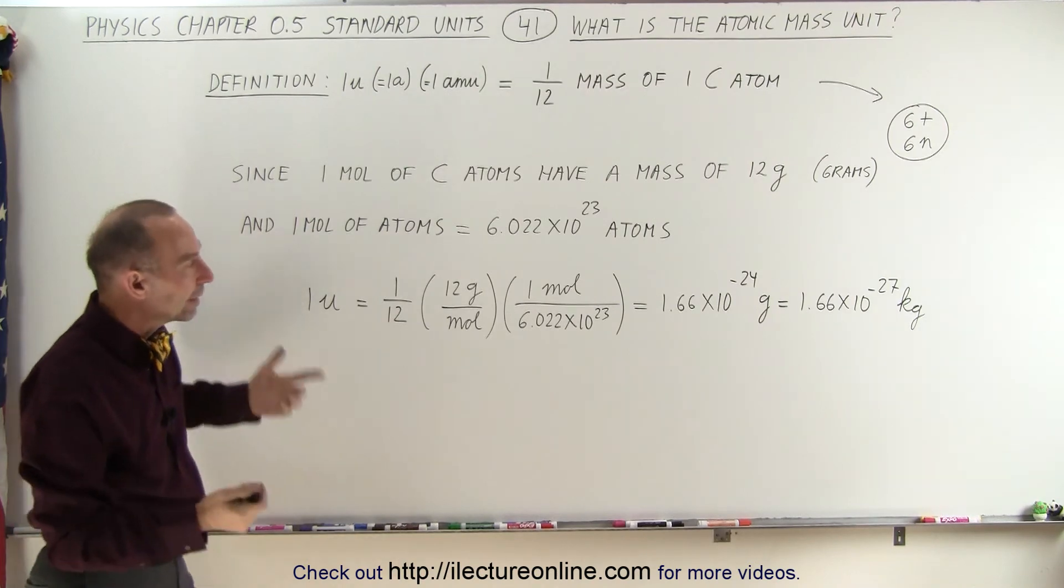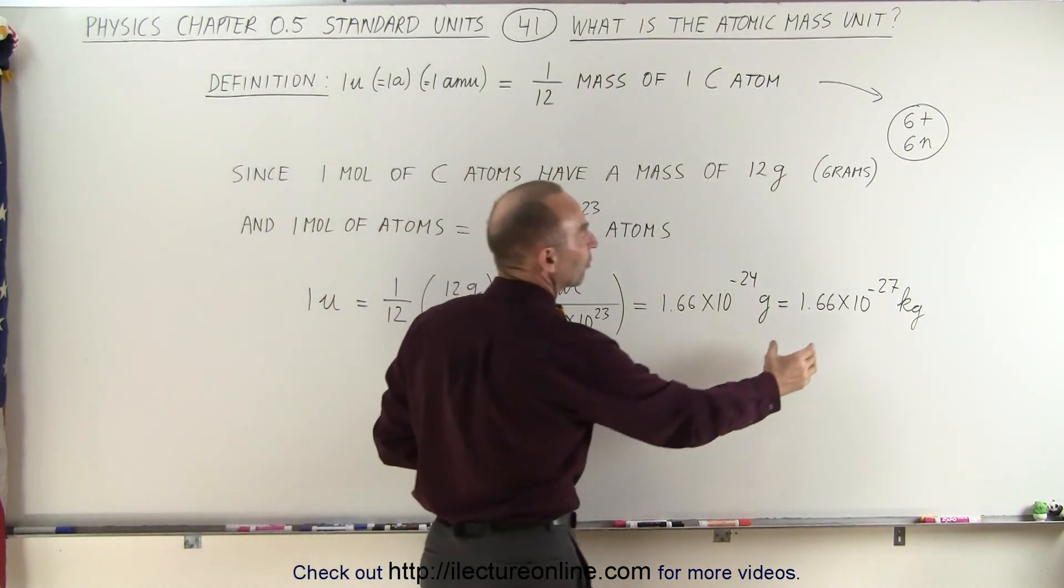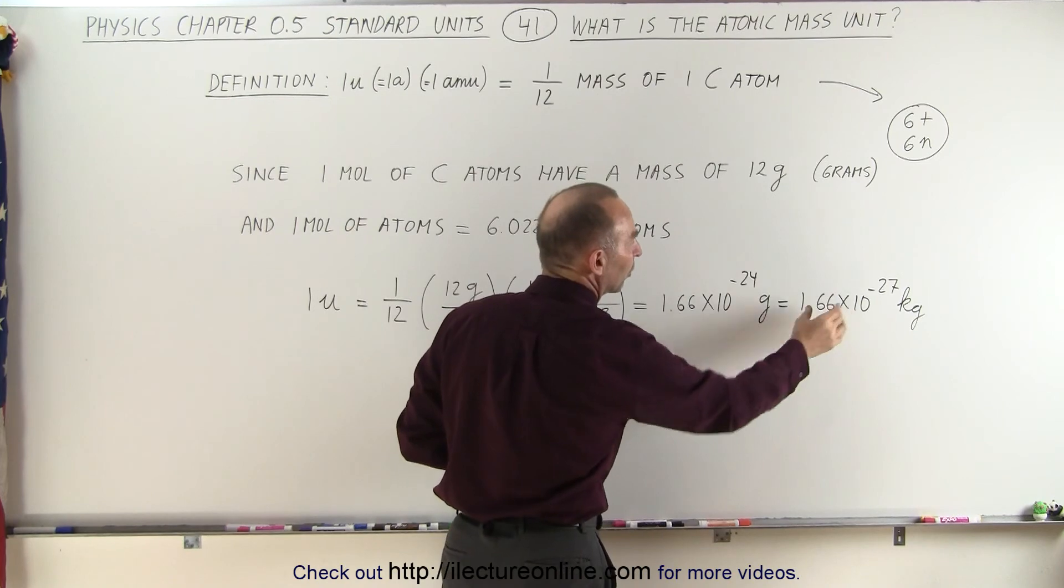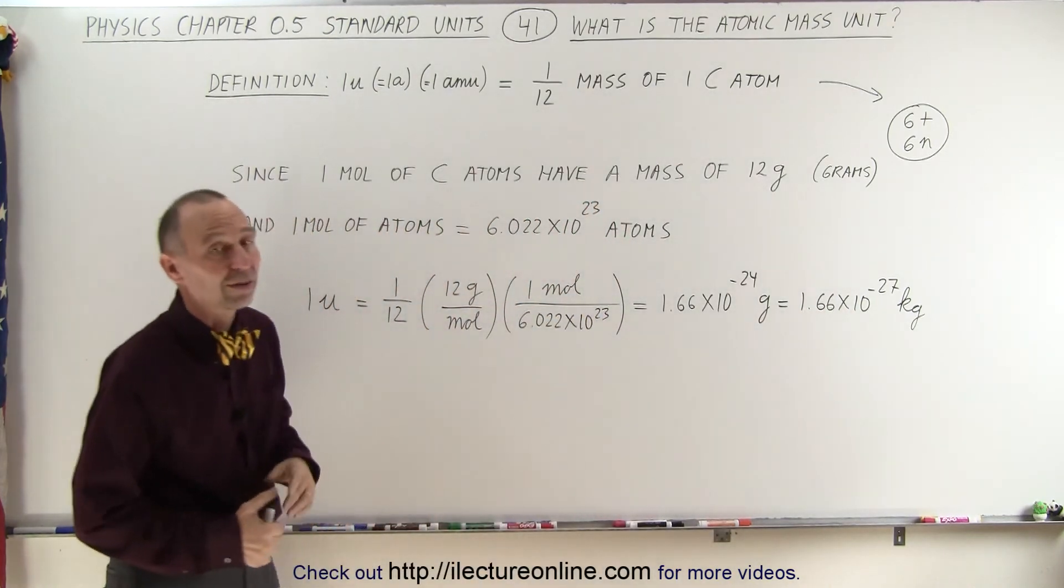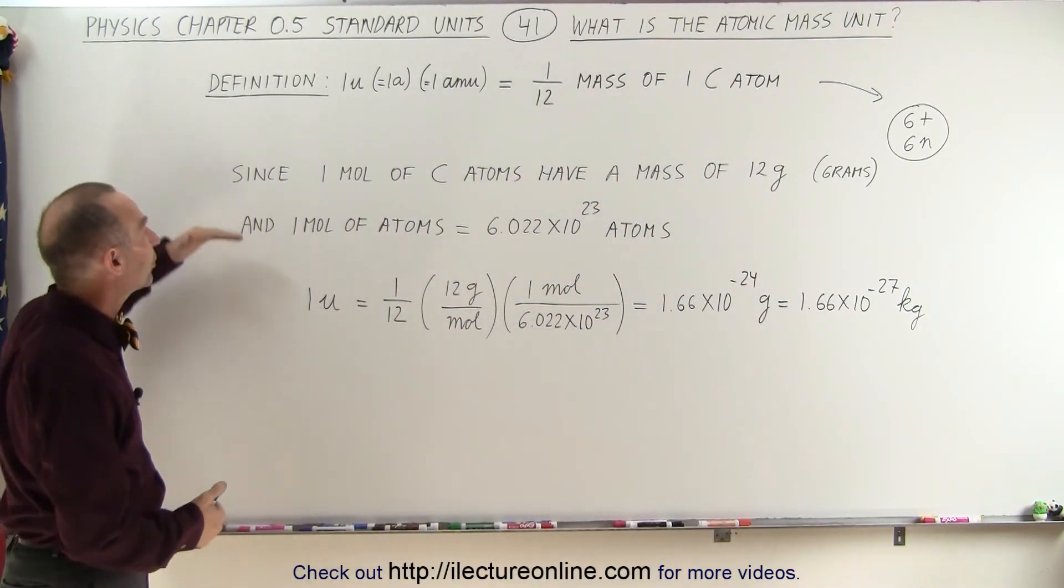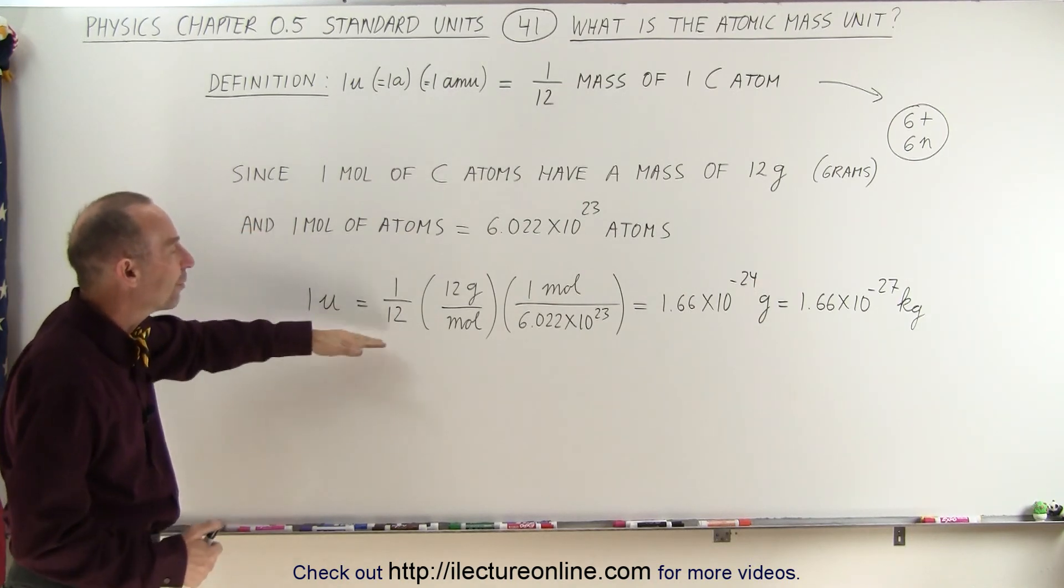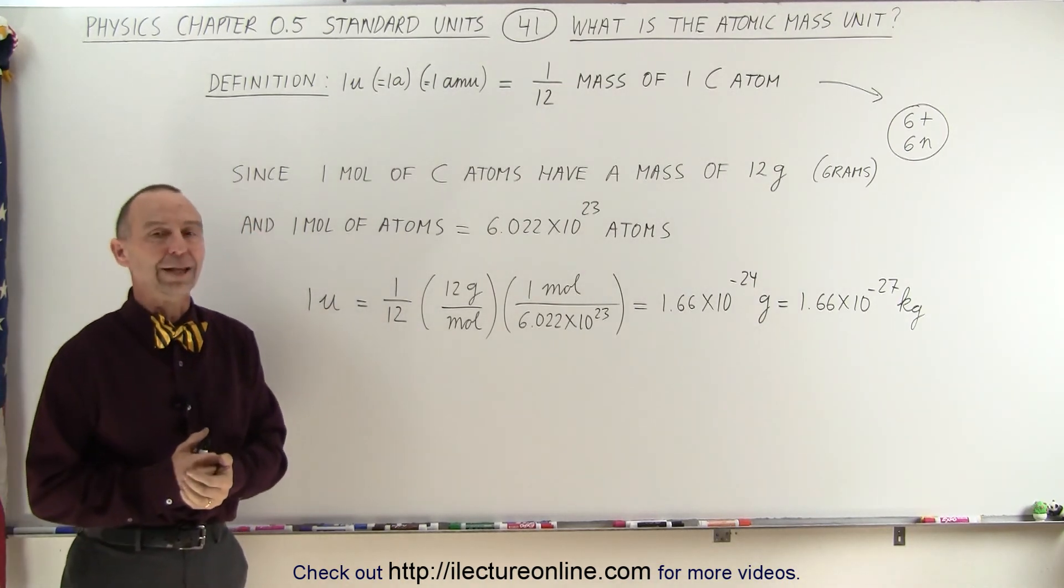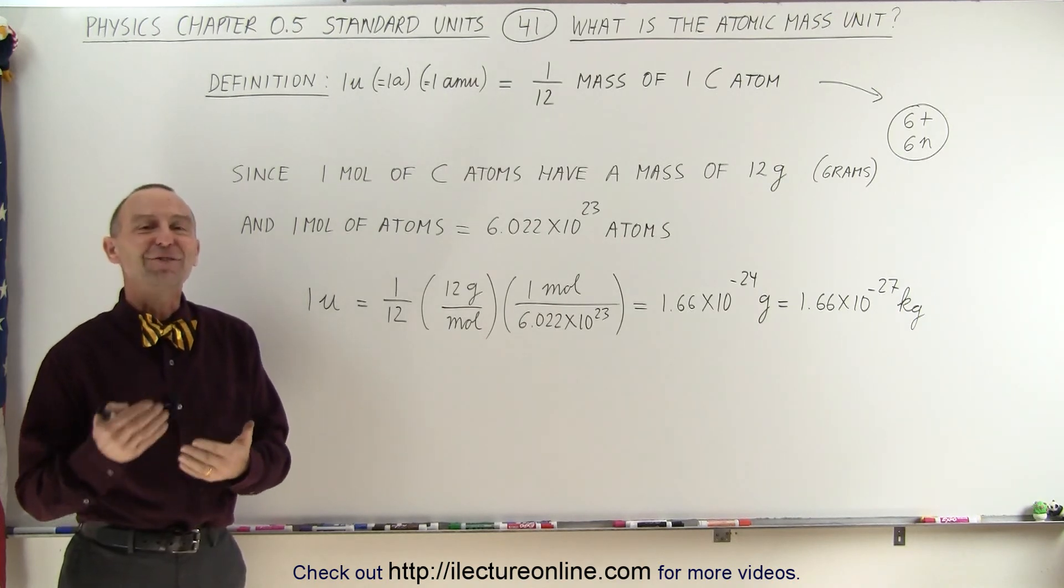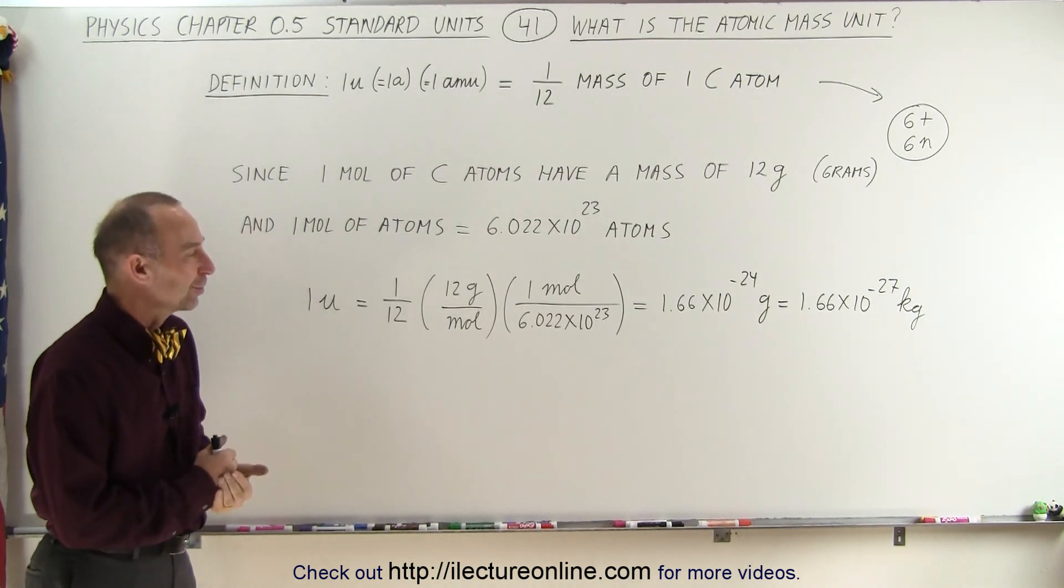But again, an atomic mass unit, by definition, is very close to the mass of a proton or neutron, which is 1.66 times 10 to the minus 27 kilograms, or perfectly defined to be 1 twelfth the mass of a single carbon atom. And that is the definition of an atomic mass unit.